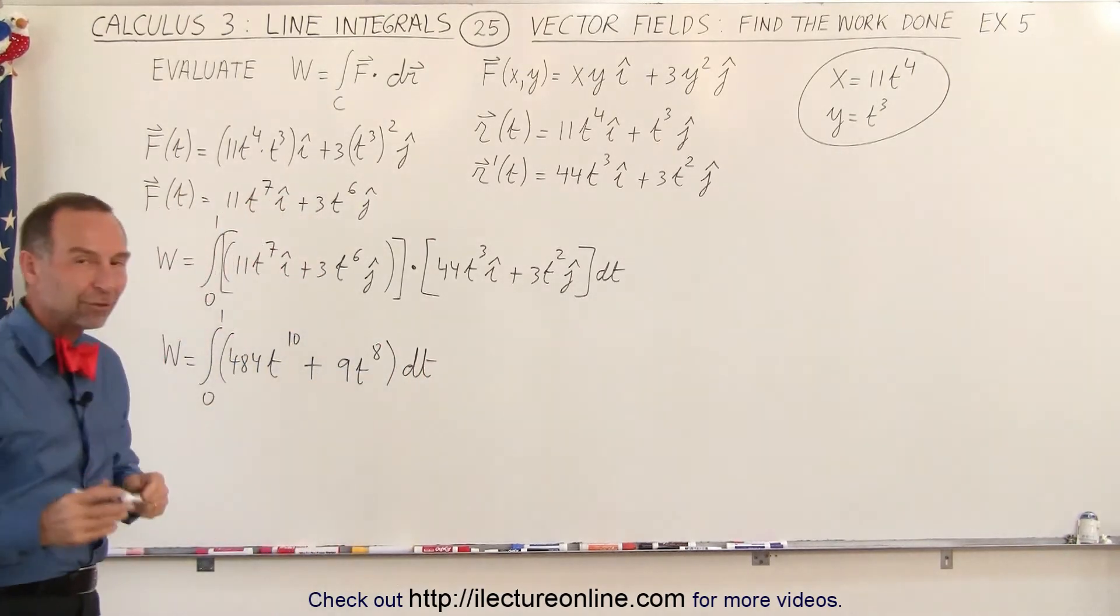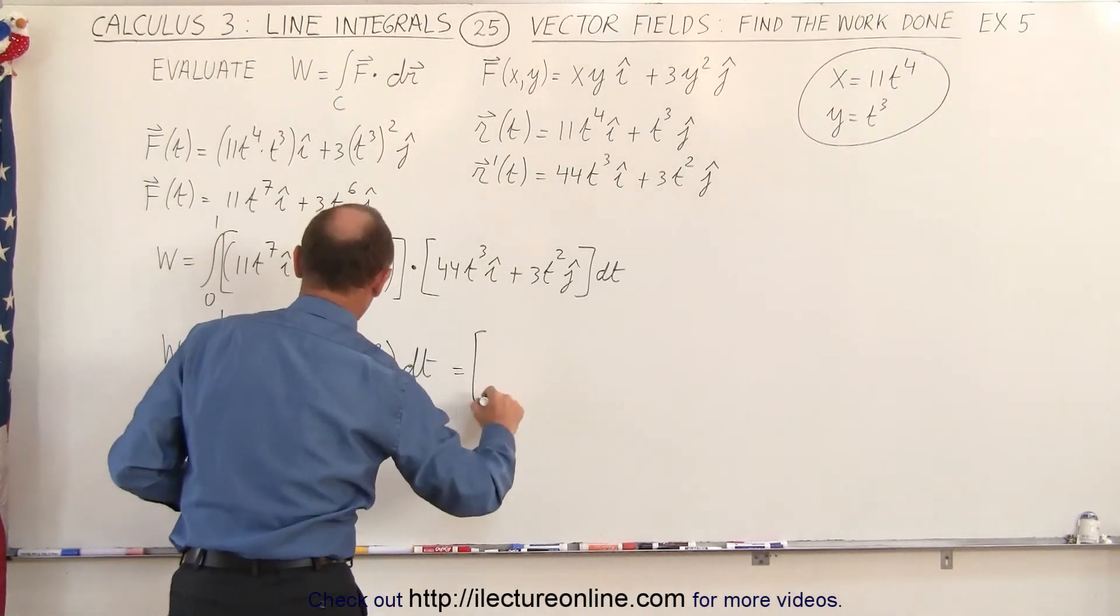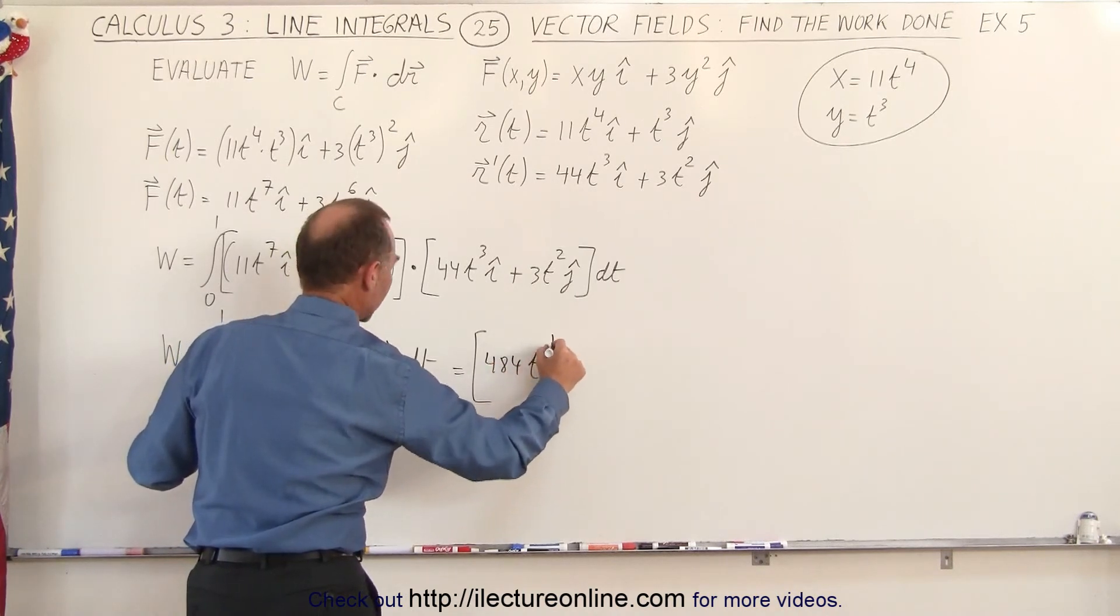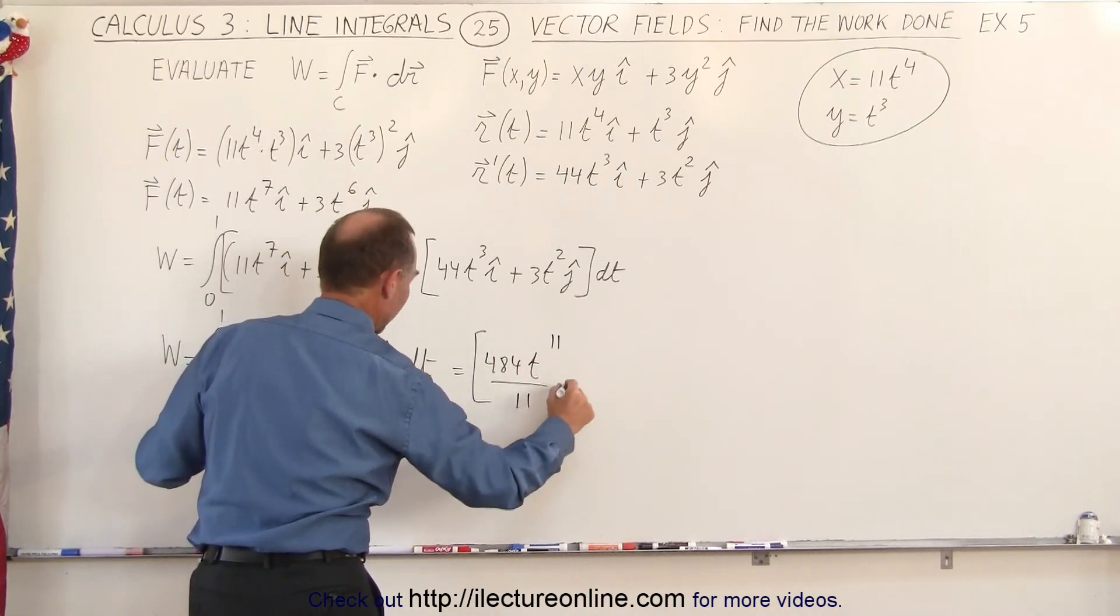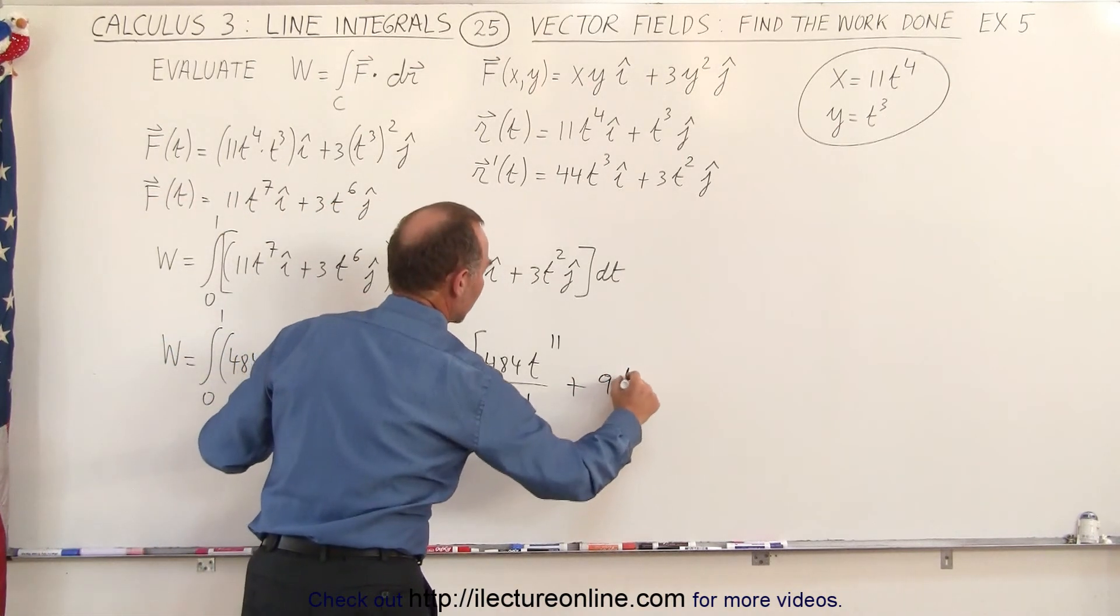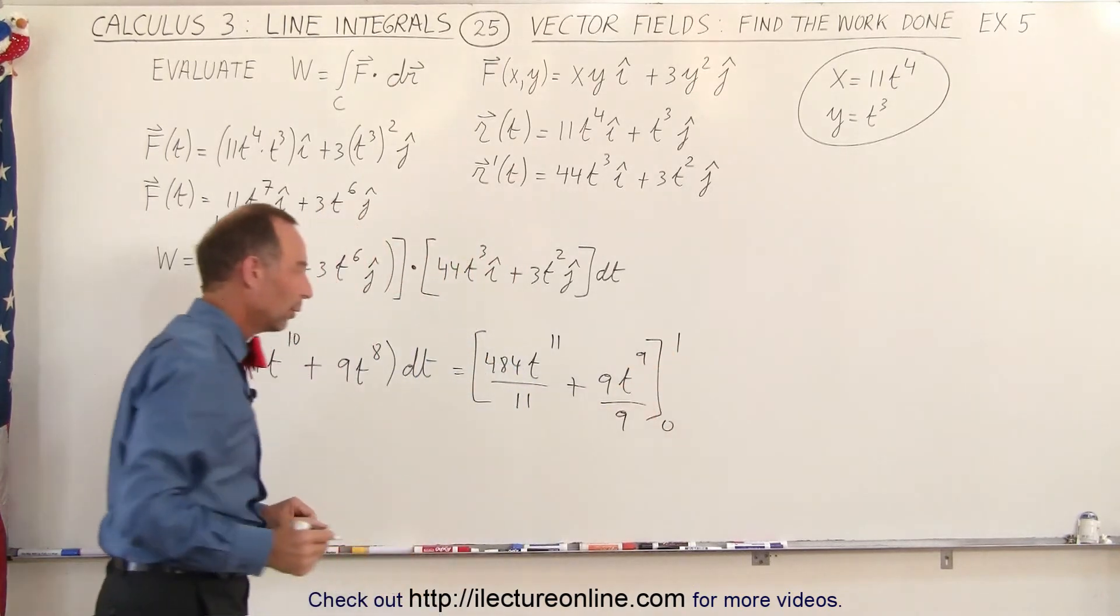And of course that's relatively easy to integrate, so this becomes the following. This is equal to 484t to the 11th divided by 11, plus, and here we get 9t to the 9th divided by 9, and the limits of integration are from 0 to 1.